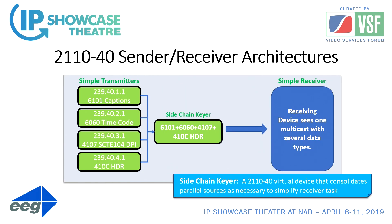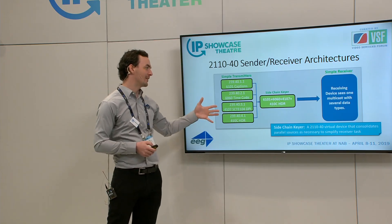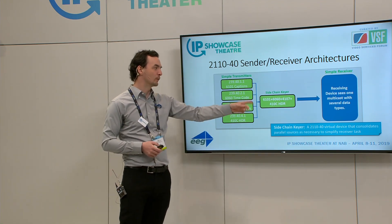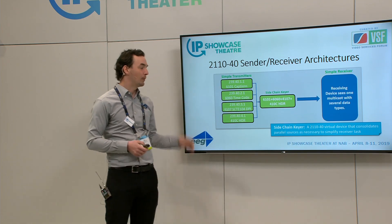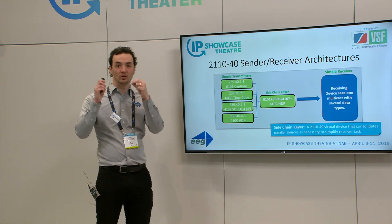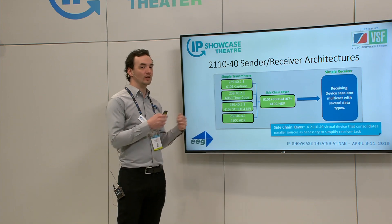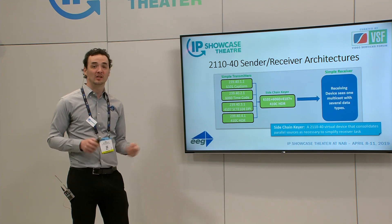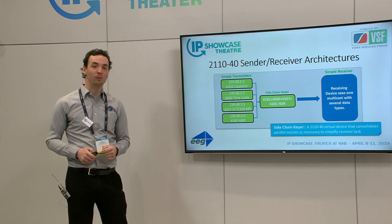A combination of both approaches may be required. With simple transmitters and simple receivers, you may need a device that's essentially a side-chain keyer architecture for the ancillary multicast — combining ancillary data multicasts, each representing a different expert feed, into a single multicast for the receiver. That expert device would have settings for the order to put packets in the multicast and the horizontal and line number offsets to apply once they're combined.